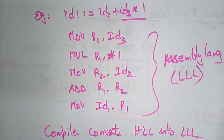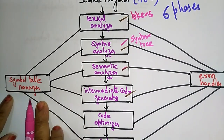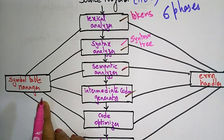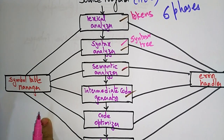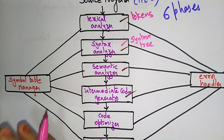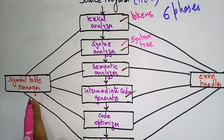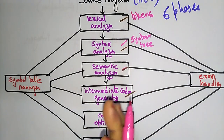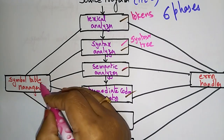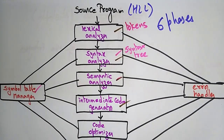The symbol table manager is a data structure that maintains all data throughout all the phases of the compiler. All identifier names along with their types are stored here, and the symbol table makes it easier for the compiler to quickly search and retrieve identifier records. The error handler is used to handle errors. These are the different phases present in the compilation process.